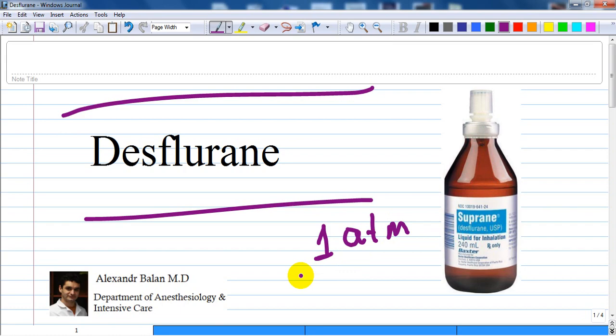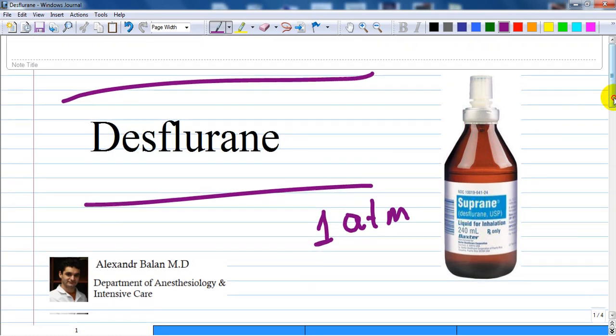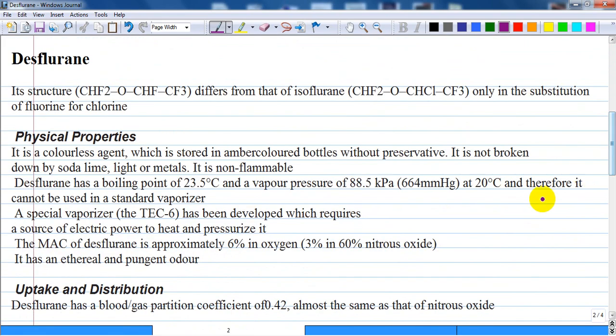Its structure differs from that of isoflurane only in the substitution of fluorine for chlorine.